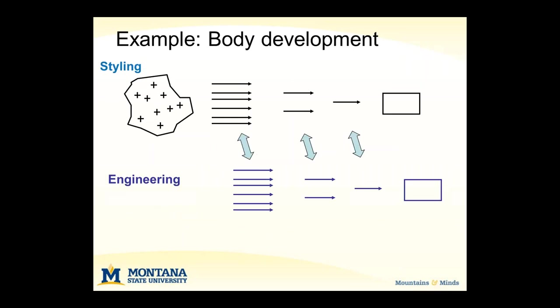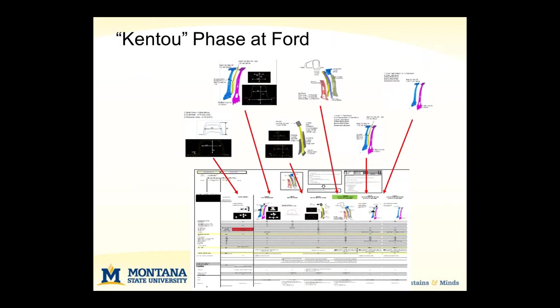In other words, both groups converge in parallel, sharing information back and forth so that it informs the development of the other, and we can look for what would be compatible designs so that when we finally converge, we don't have to loop back. The Ford Motor Company, in their recent transformation, instituted what they call the Kinto phase — borrowed from Japanese, meaning 'study' — where they study multiple alternatives in this early phase to identify the pluses, minuses, and compatibility with other subsystems in order to make their elimination decisions. This produced a great deal of efficiency and effectiveness in their development process.